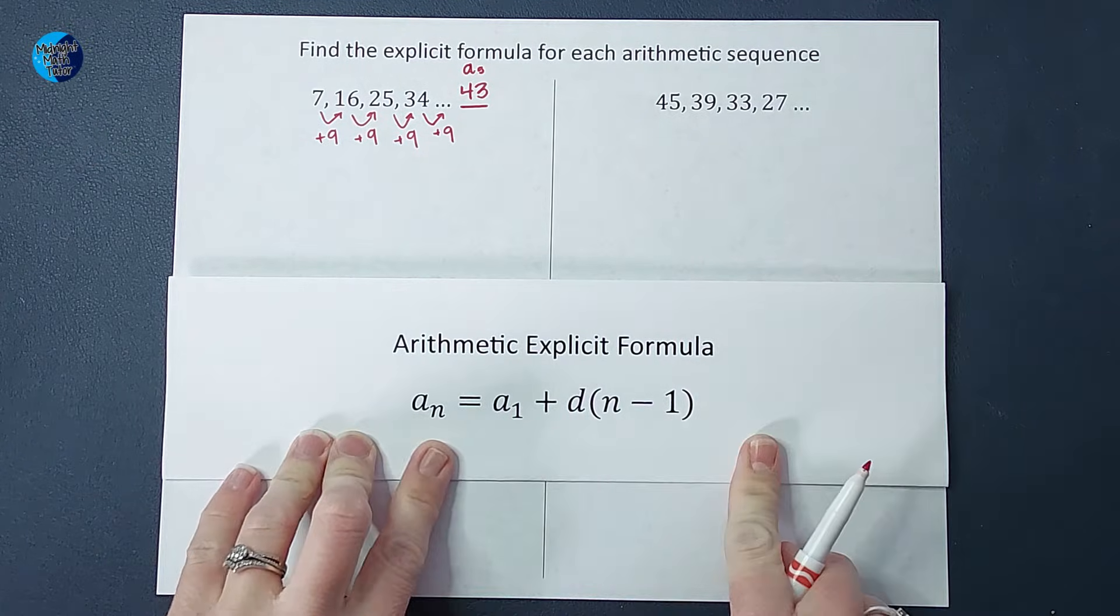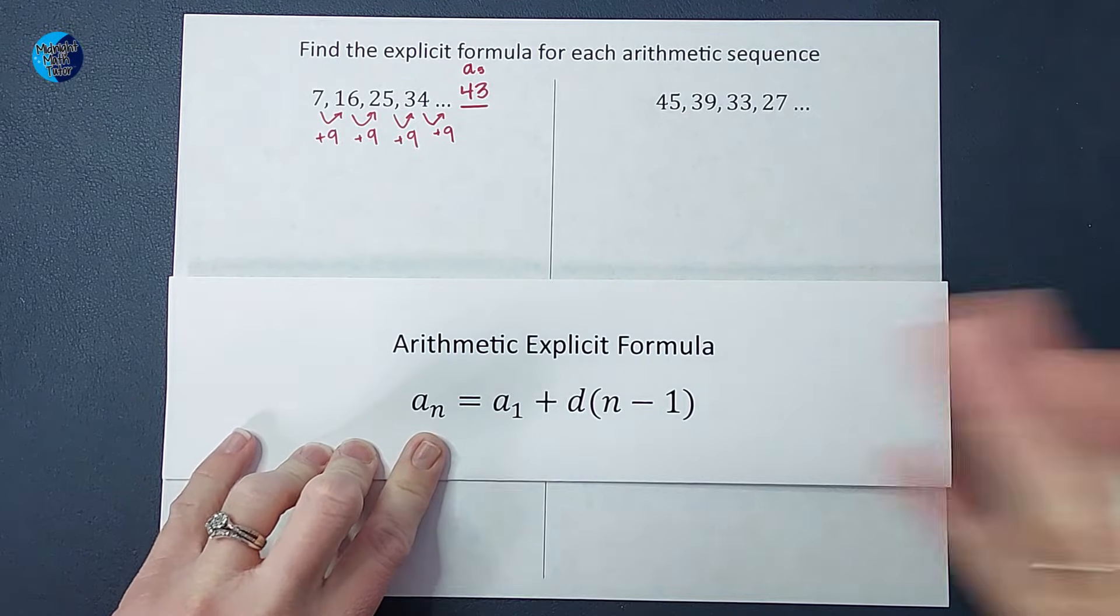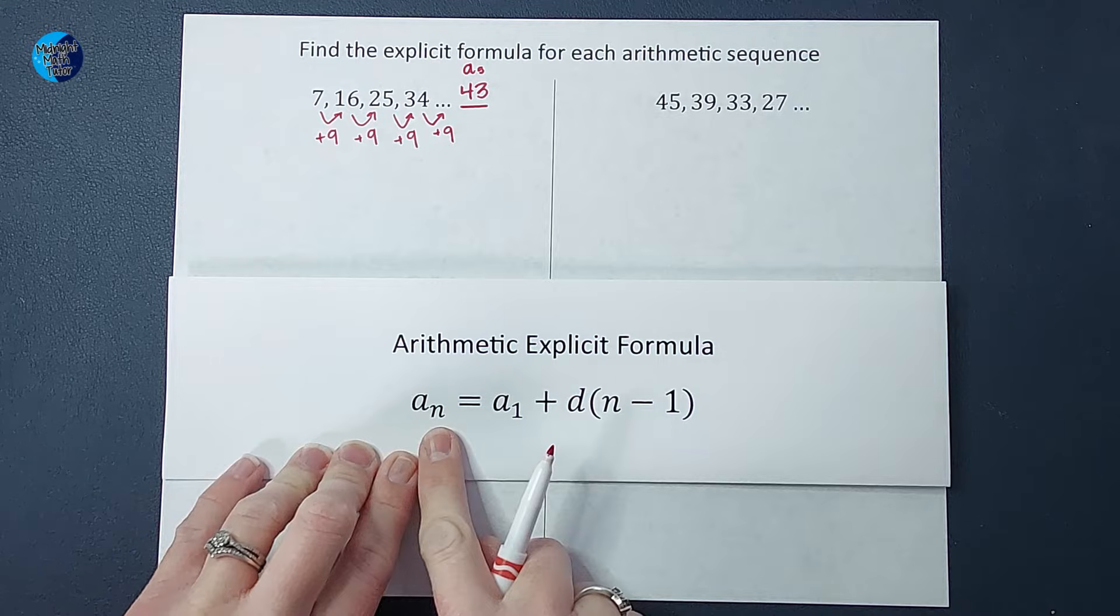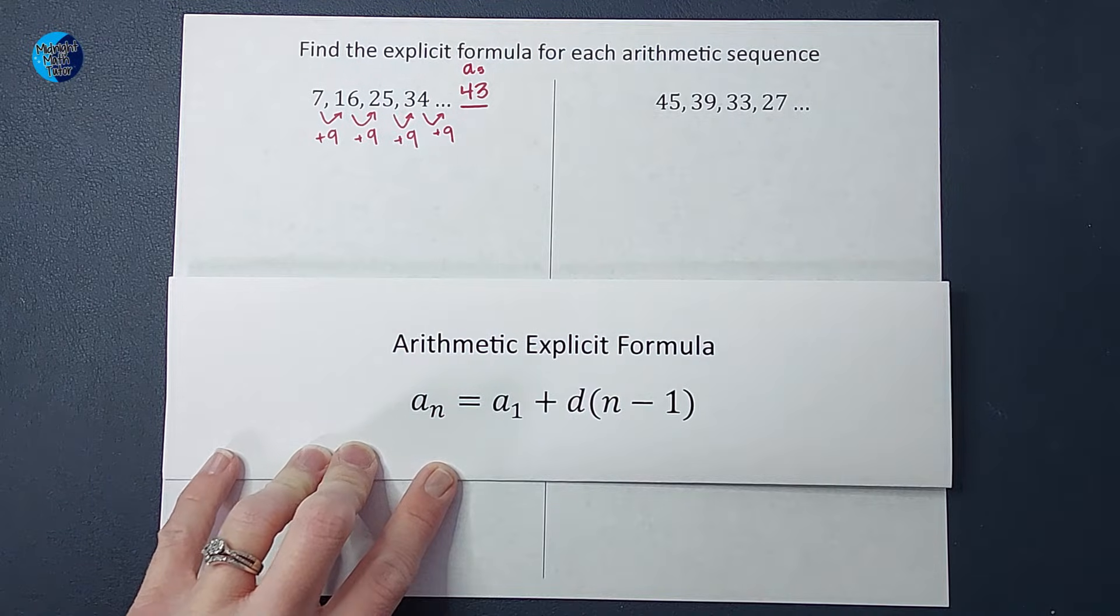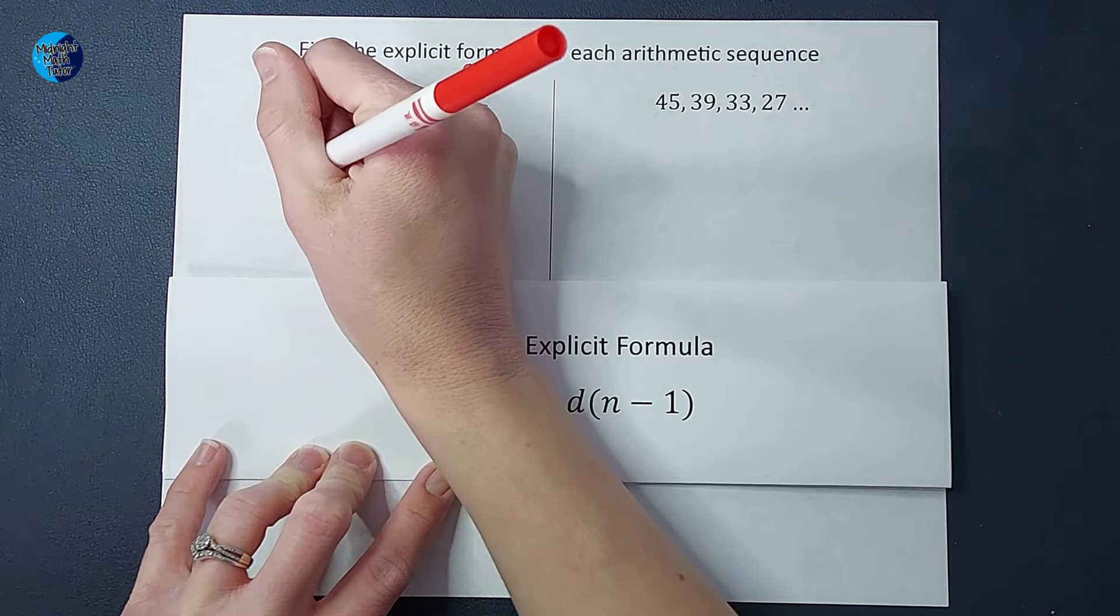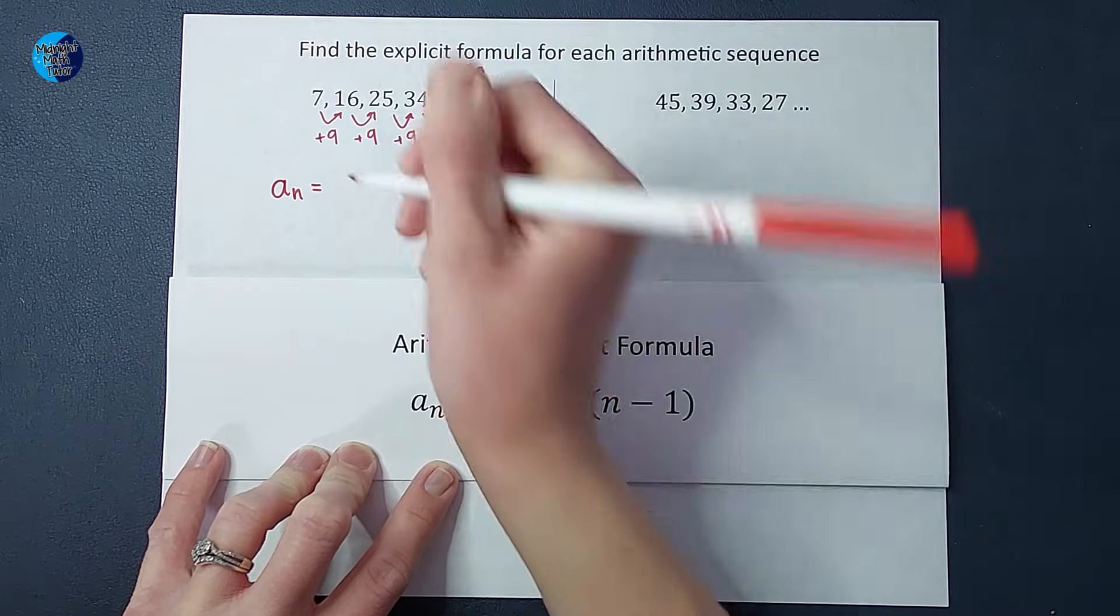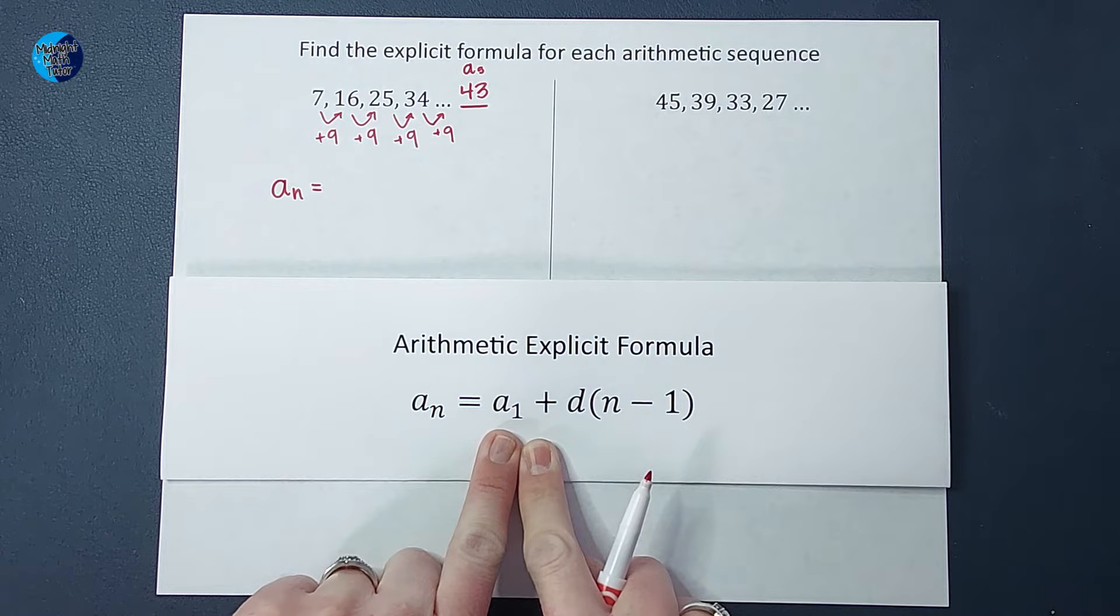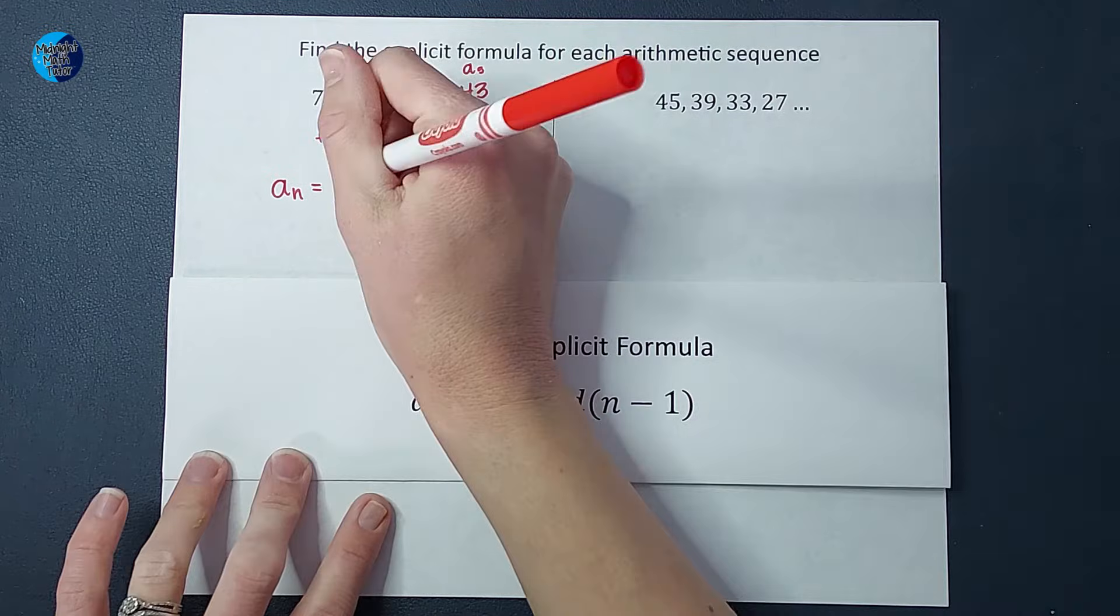So we're going to fill this in and I'll kind of explain it as we go. Remember this a sub n means whatever number you're looking for. If you're looking for the hundredth number in the sequence, plug in 100 for n or whatever you're looking for. So whatever number you want to find, that is equal to the first term in my sequence, a sub one, which in this case is seven.